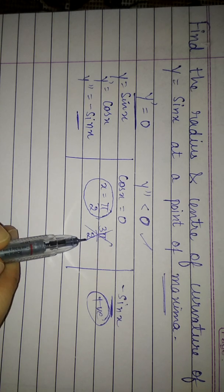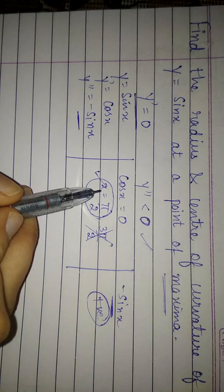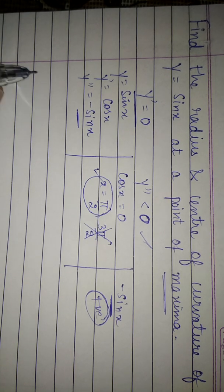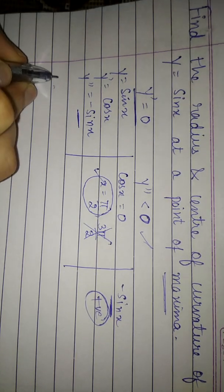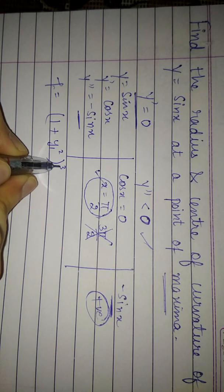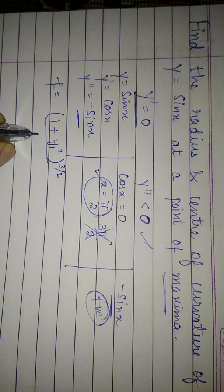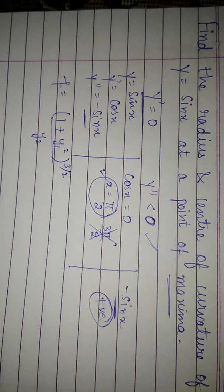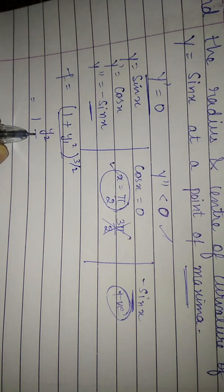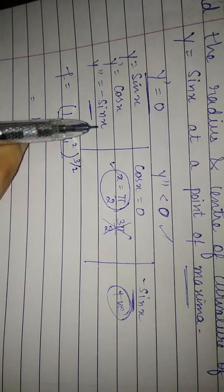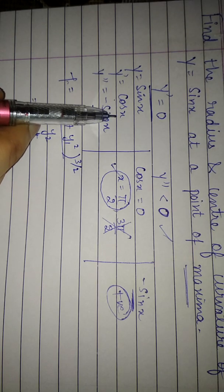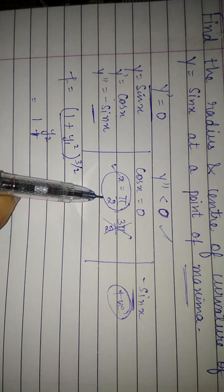So for radius of curvature, we have the formula (1 plus y₁²)^(3/2) upon y₂. So y₁ we have is cos x. Cos x at π by 2 will be 0.